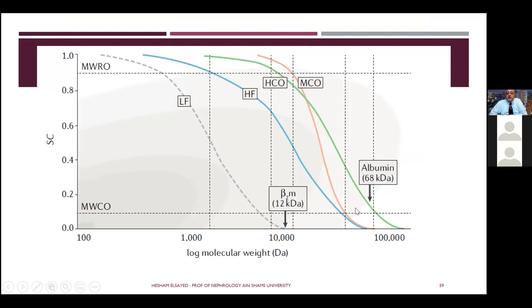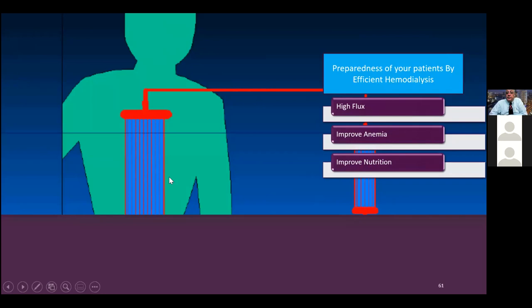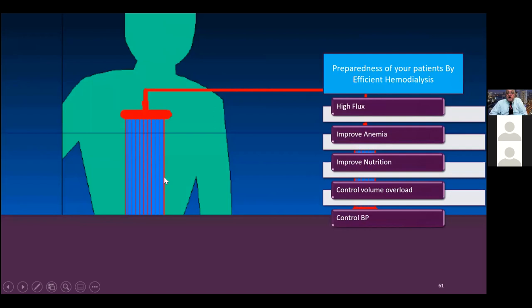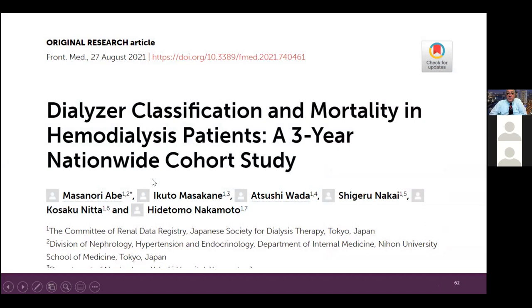In summary: improving flux and permeability improves adequacy, anemia management, and nutrition; control of volume overload requires cool dialysate and awareness of plasma refilling; blood pressure must be controlled intra- and interdialytically; treat any inflammation and vascular access recirculation. All of this knowledge underpins dialyzer classification and its impact on patient mortality, which will be covered in Part 3 of these basic principles.